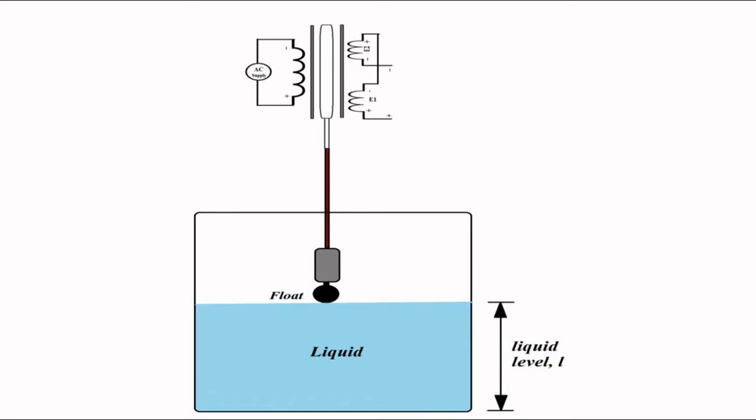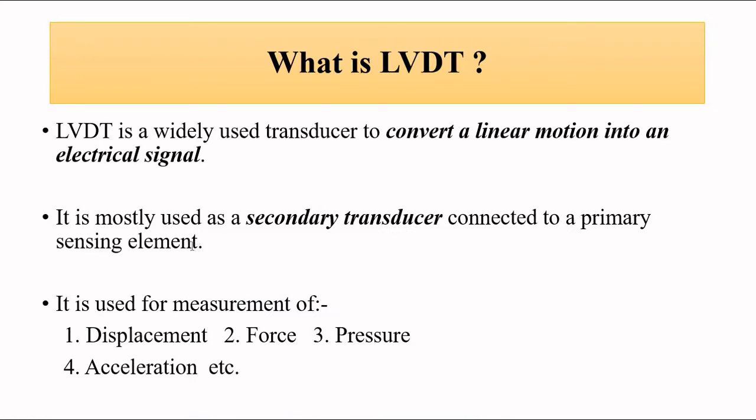LVDT basically is Linear Variable Differential Transformer, which is used to convert linear motion into electrical signal. It is used for displacement, force, pressure, and acceleration measurement.